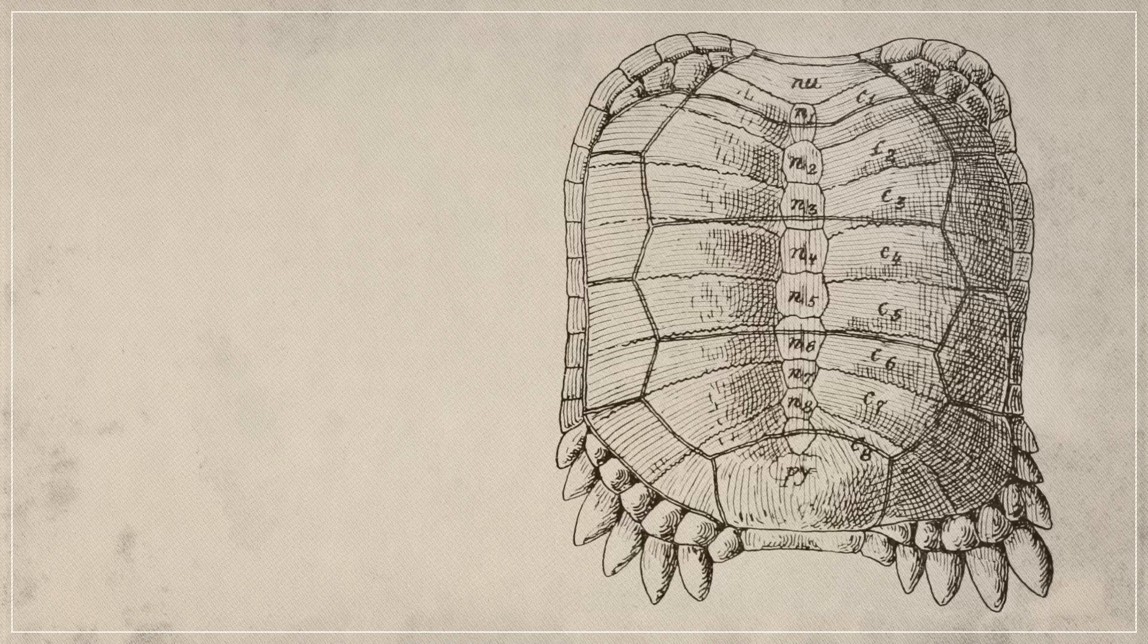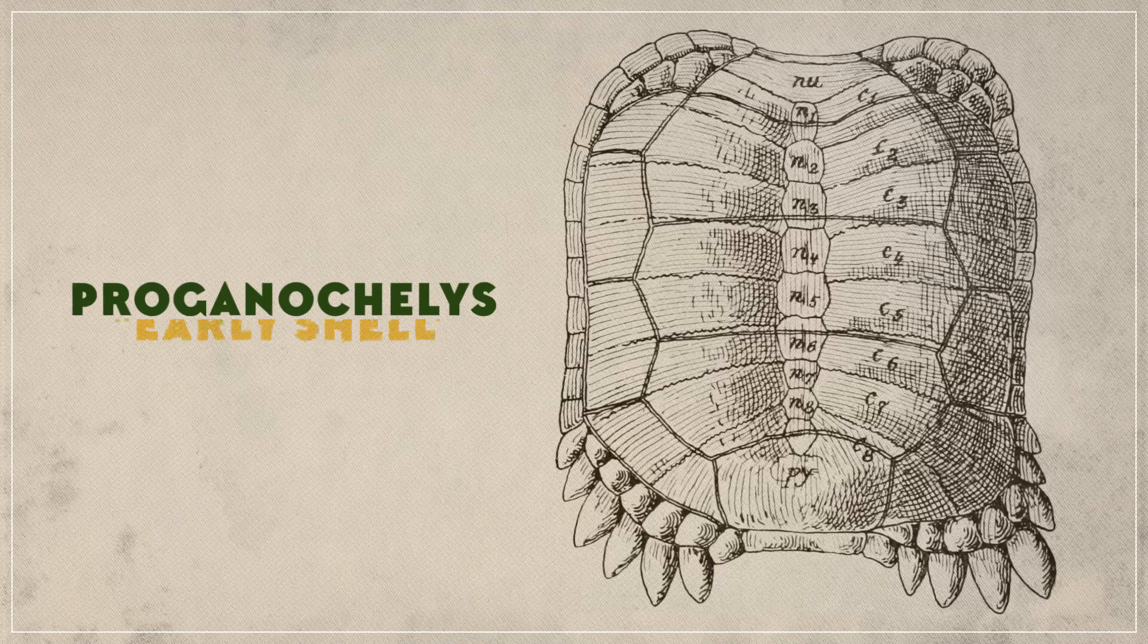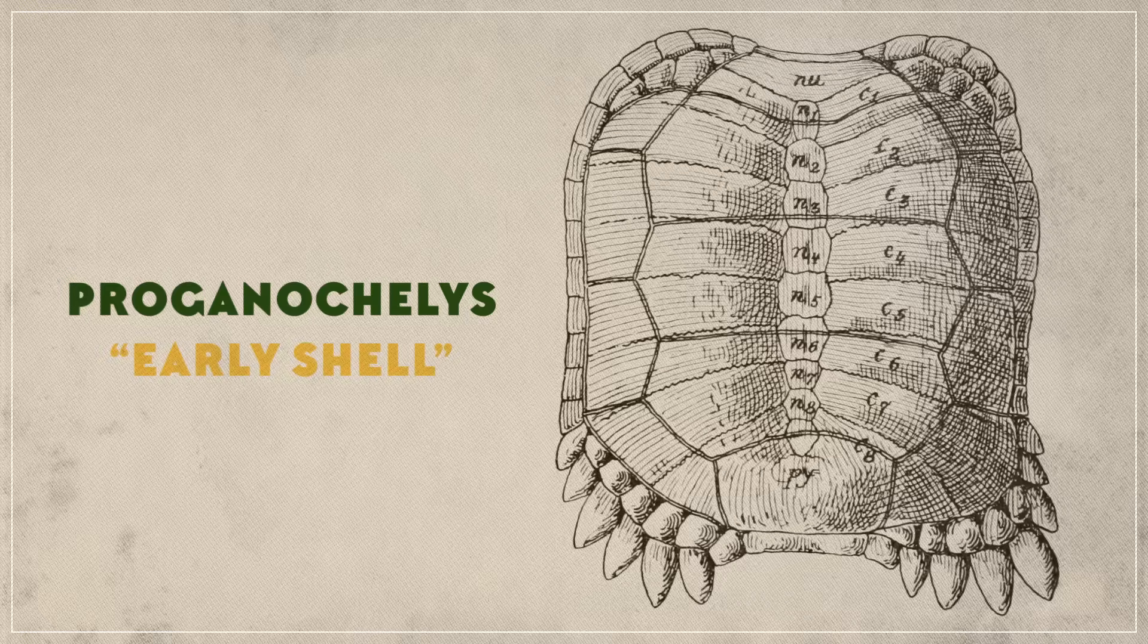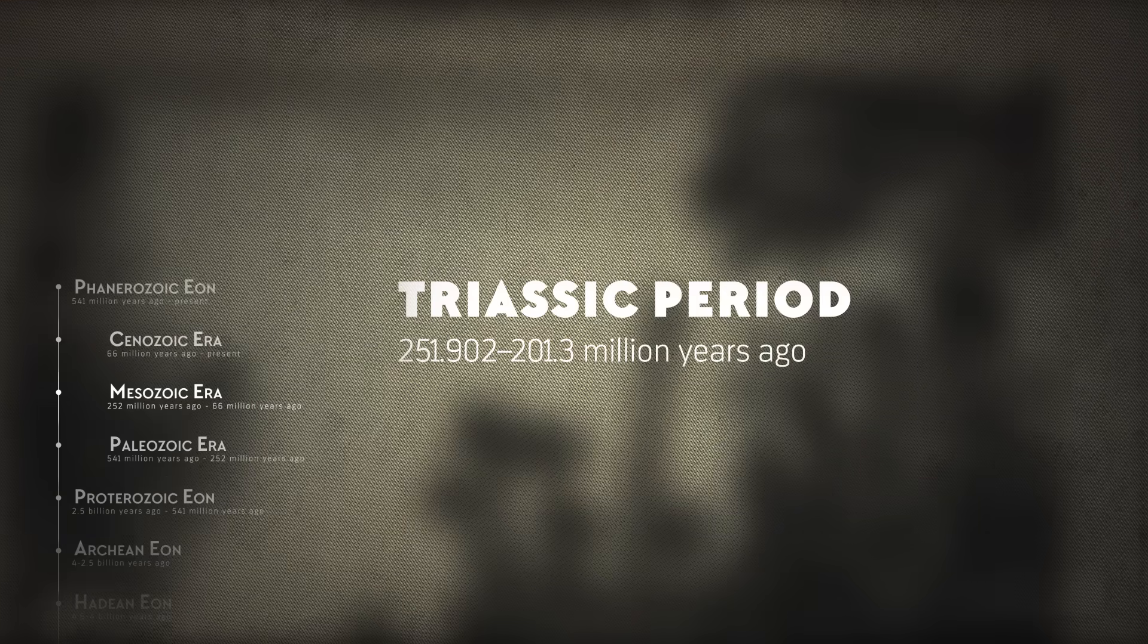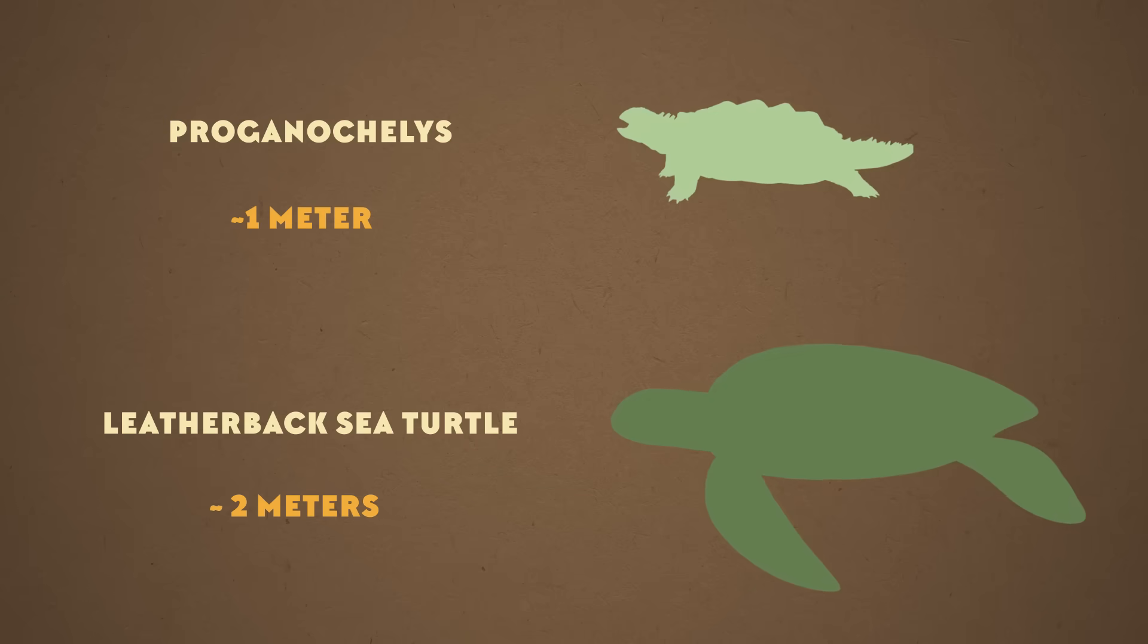The German turtle that started it all was called Proganochelys, which means early shell, and it lived about 210 million years ago in the late Triassic period. At about a meter long, it was pretty big, about half the length of the largest species alive today.